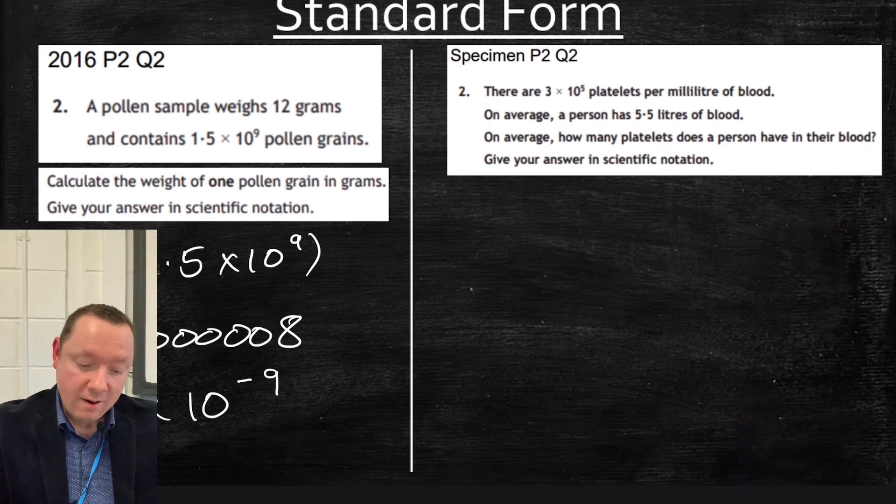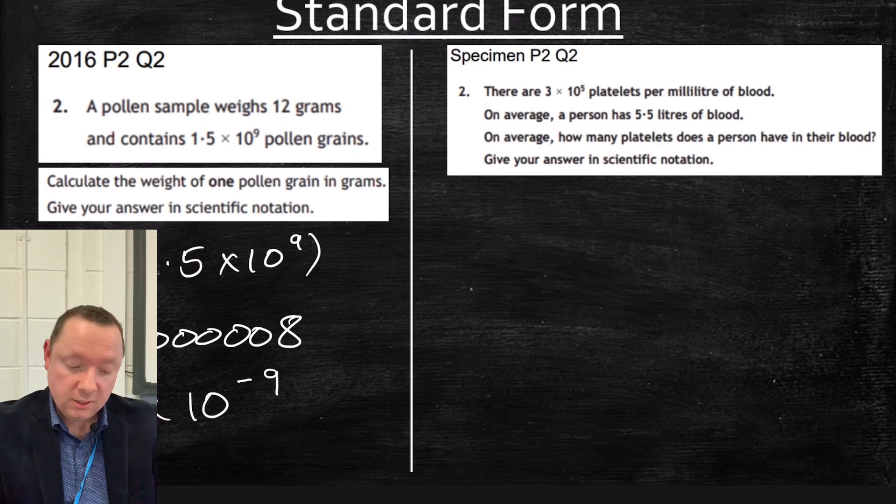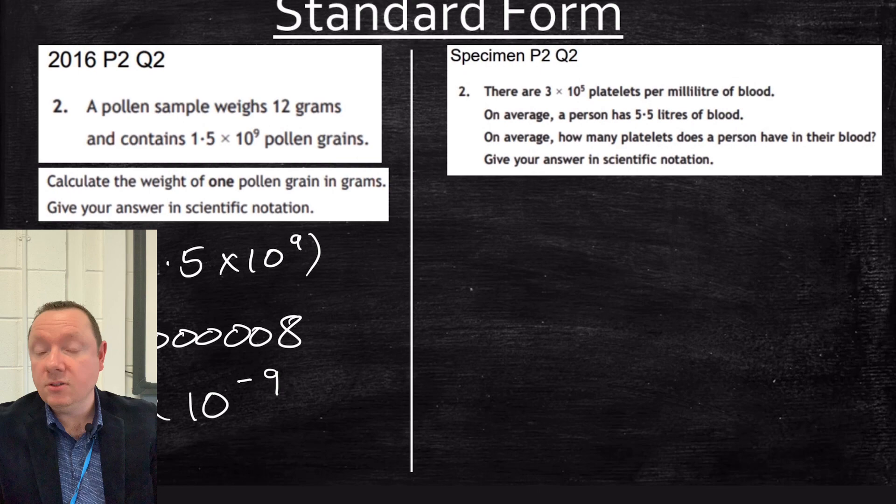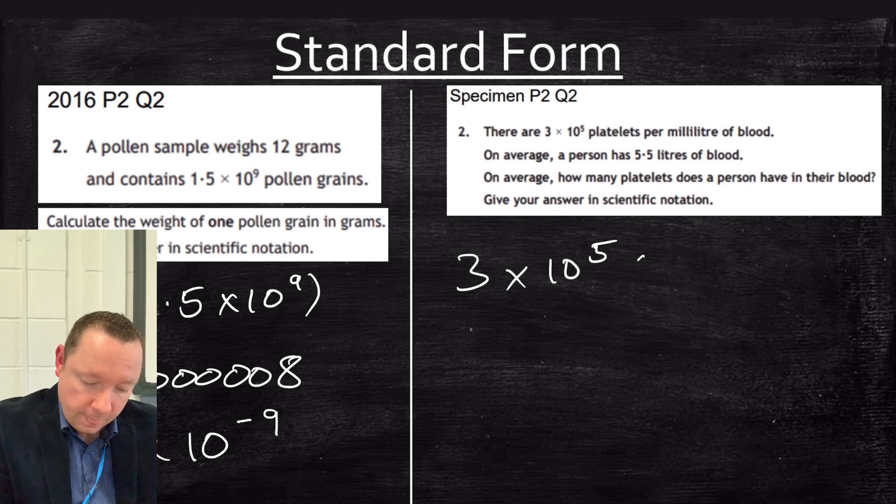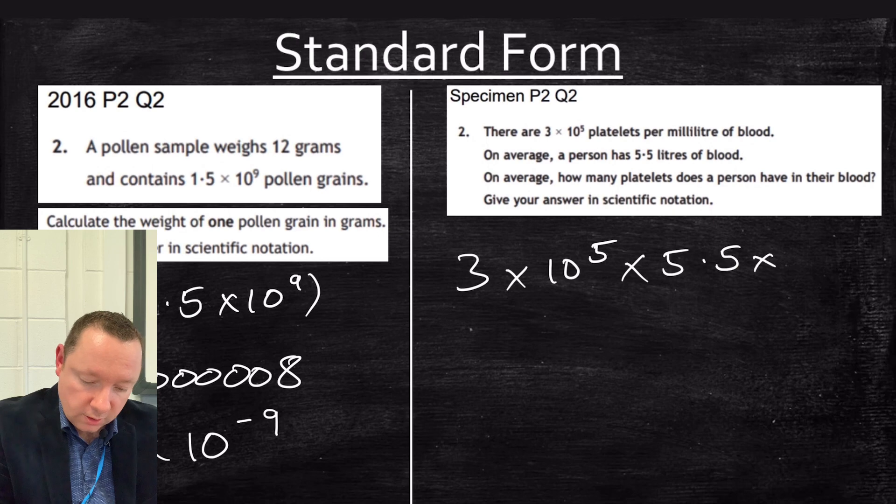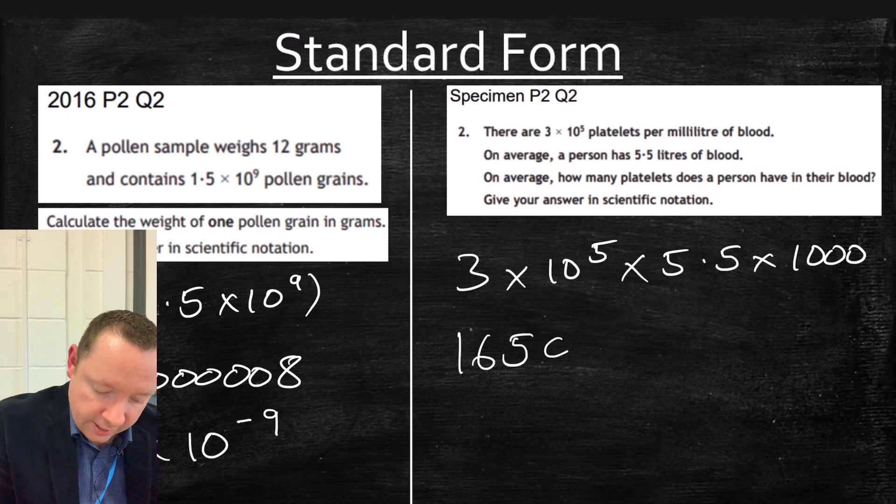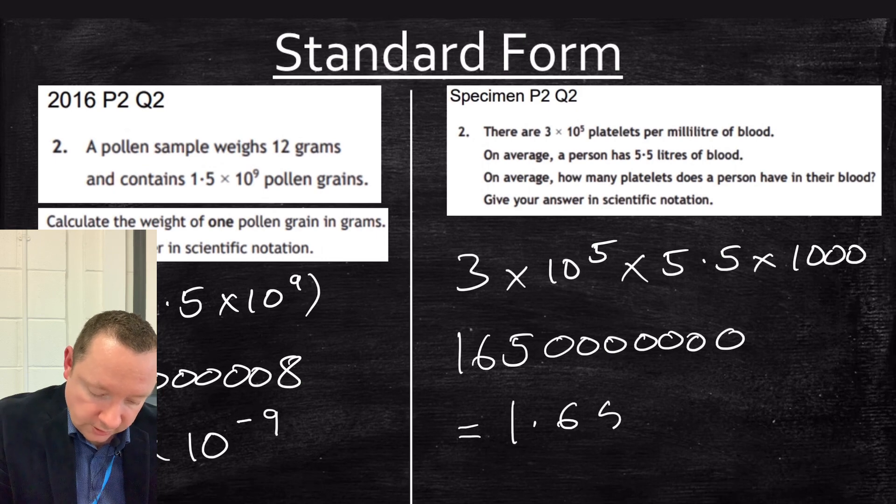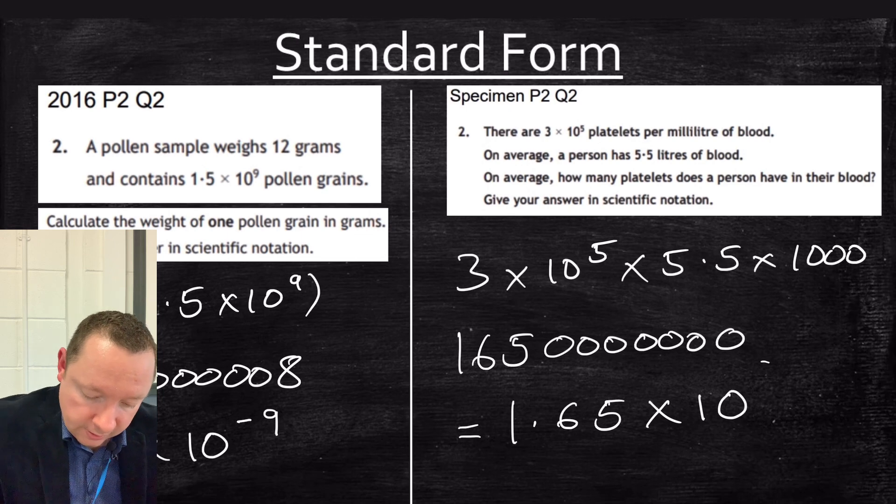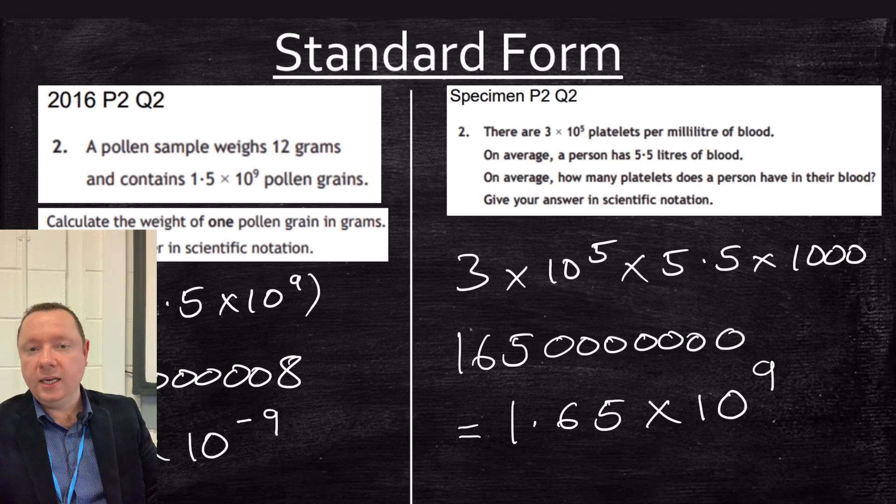There are 3 times 10 to the 5 platelets per milliliter of blood. On average, a person has 5.5 liters of blood. On average, how many platelets does a person have? Give your answer in scientific notation. So I have to look at how many a person's got in total, I need to times. So I need to do 3 times 10 to the 5 times 5.5 liters, but I need to times that by a thousand because there's a thousand milliliters in a liter. That equals 1.65 times 10 to the power of 9.